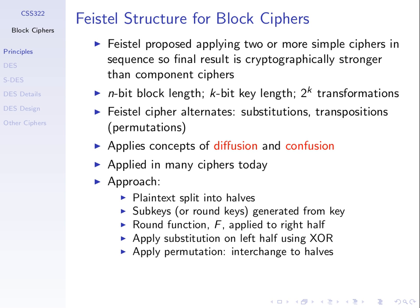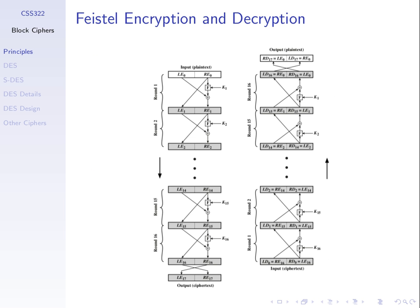We saw the advantage of doing multiple iterations when we looked at the rows-columns example. When we encrypt once with rows-columns, we can see some structure in the output arrangement of letters. When we encrypt again, the ciphertext looks more random. So by repeating the operations, security can improve. Of course, if you repeat too often, performance goes down because each operation takes time to execute.